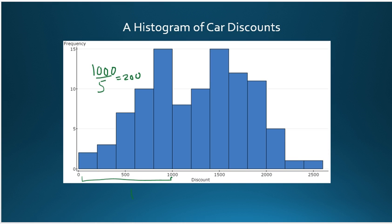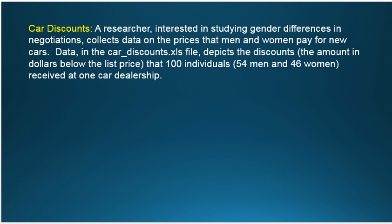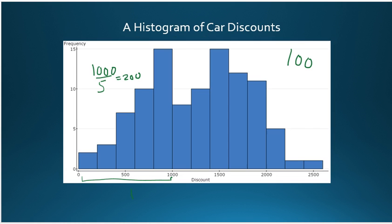The meaning of the histogram, it summarizes how many of the observations, how many of the discounts, and there are a total of 100 discounts. There were, as we go back to the previous slide, there were 54 men and 46 women.